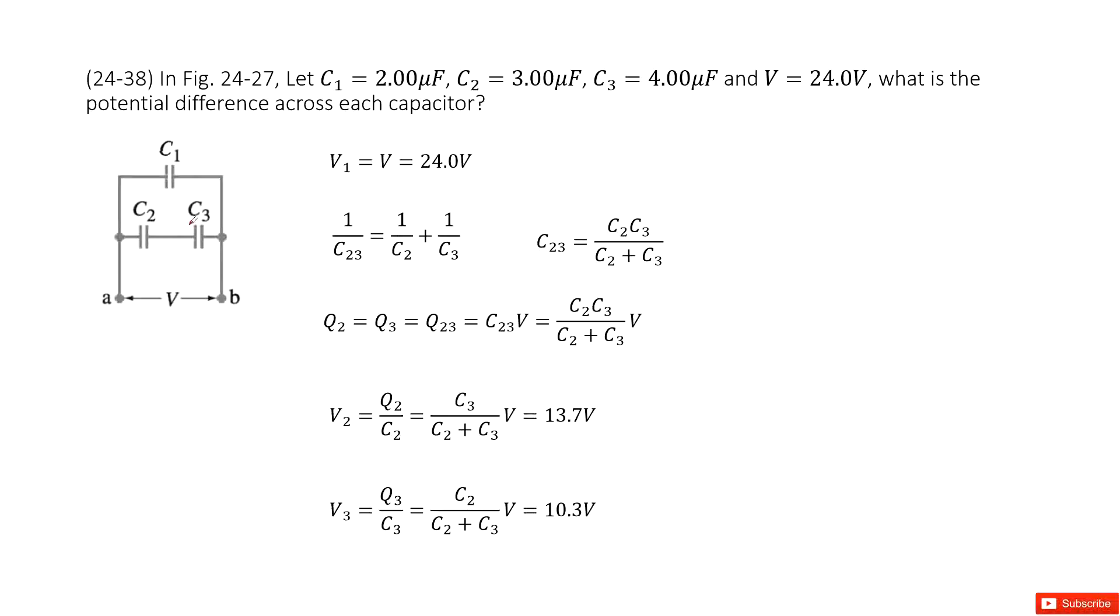So you can see we have this circuit. The capacitances C1, C2, C3 are given, and the voltage from point A to B is given as 24 volts.